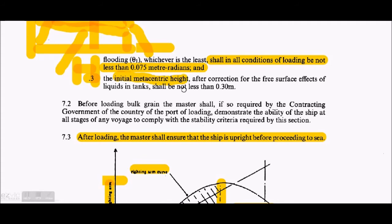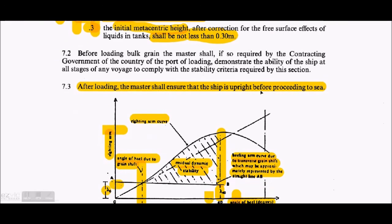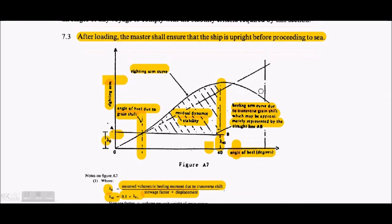The initial metacentric height (GM) shall not be less than 0.3 meters after the correction for free surface effect of liquids in tanks.